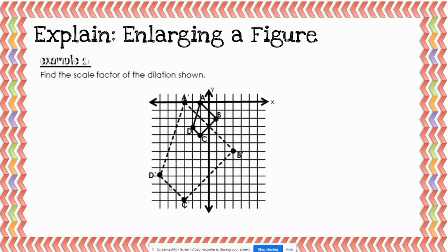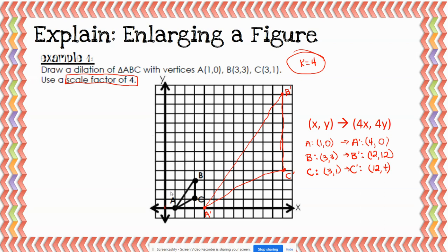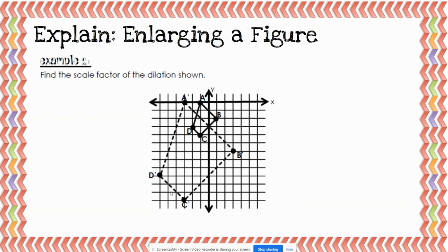Example two says: find the scale factor. In example one we were given the scale factor and had to graph it. But in example two, you're given the graph and you have to find the scale factor. The first thing we need to do is figure out where our points are located, because we're going to compare A, B, C, and D to A prime, B prime, C prime, and D prime — we know that we would have multiplied each coordinate by some number to get to the image.